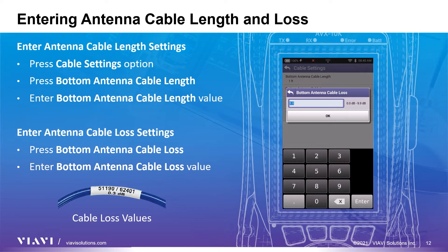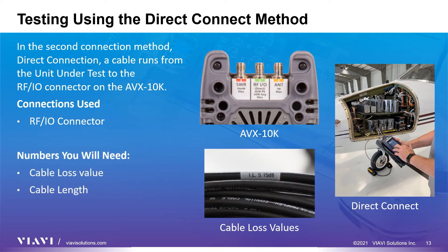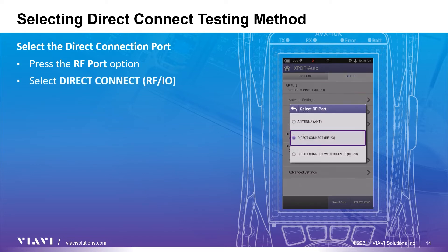As we said before, the settings for radiated testing using the antenna test setup are the same regardless of the test you perform. The next test method is direct connect. In this scenario, the cable is directly connected to the unit under test and the RFIO port of the AVX10K. You will need the connector cable loss value from the sticker on the cable and the connector cable length. To access the RF port options, press the RF port button, then choose direct connect RFIO from the list.